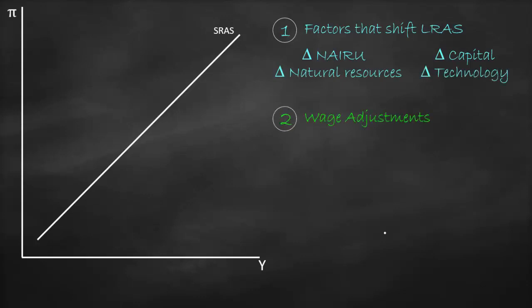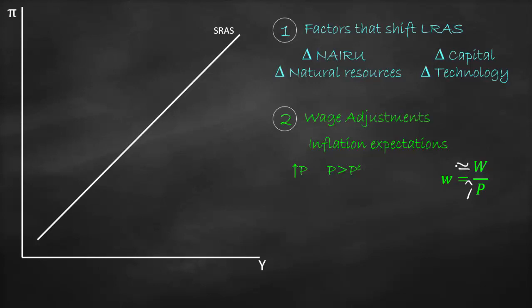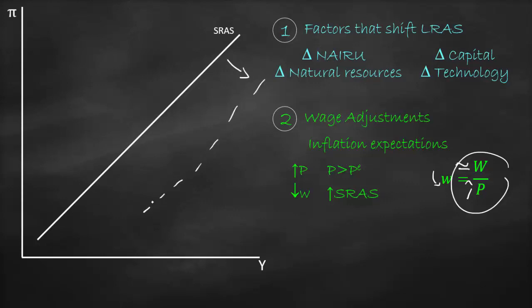Another factor that shifts the short-run aggregate supply curve is wage adjustment based on inflation expectations. If we have higher prices, prices will be bigger than expected prices, so actual inflation will be bigger than expected inflation. Because nominal wage is constant due to a contract, the real wage ratio will fall — real wage goes down. Since real wage goes down, the short-run aggregate supply curve will shift to the right.